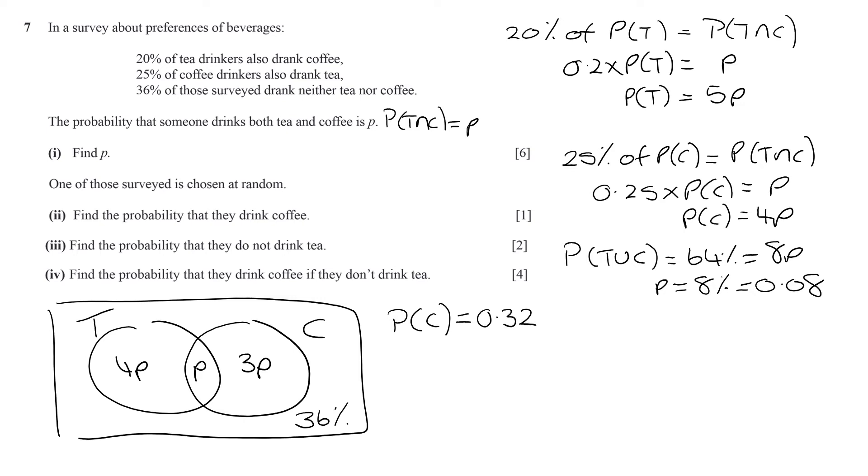Find the probability that they do not drink tea will be 1 minus 5p, so 1 minus 0.4, which is 0.6.